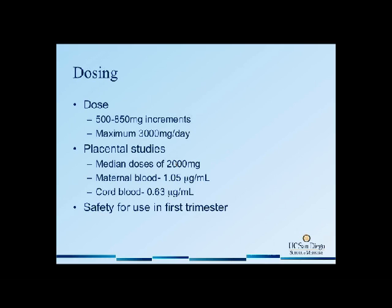The dose of metformin outside of pregnancy can range from 500 to 850 milligram increments for a maximum of 3,000 milligrams per day. Placental studies show that metformin does cross the placenta. However, we have very good data about safety of use in the first trimester, including from patients with polycystic ovarian syndrome who used it to induce ovulation. Studies have shown no increased risk of congenital anomalies, birth defects, or adverse neonatal outcomes with metformin use in the first trimester.